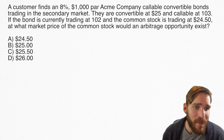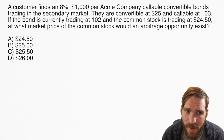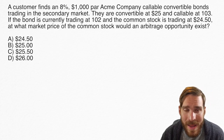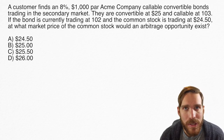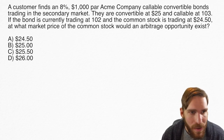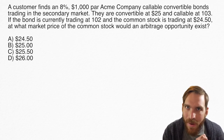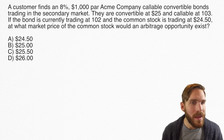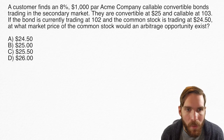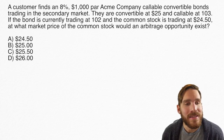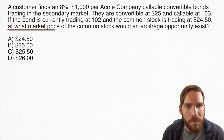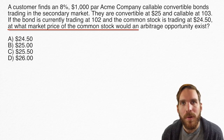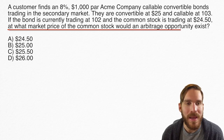Before we get to the numbers, and I find this is very important for any type of question like this, we need to figure out what the intent of the question is. I don't want us to go down a path calculating numbers that don't make sense or looking at numbers that aren't important. Let's figure out what the crux of this question is. Looking at the second half of the last sentence: at what market price of the common stock would an arbitrage opportunity exist?